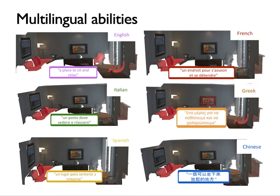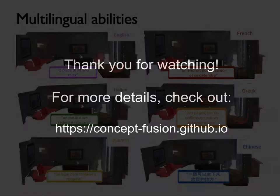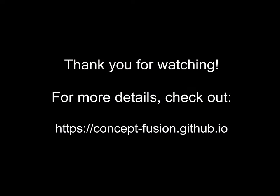Last but not least, our system can be queried in multiple languages. Here we show the results for the query 'a place to sit and relax' in six different languages. That's all for now. I hope this video has helped demonstrate the potential of our mapping system across a wide range of tasks. For more details and demos, please check out our project webpage, linked here. Thank you for watching, and have a wonderful day!